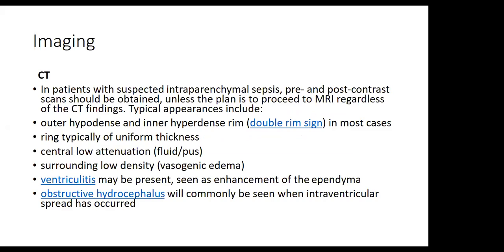CT: in patients with suspected intraparenchymal sepsis, pre- and post-contrast scans should be obtained. Typical CT appearance includes an outer hypodense and inner hyperdense double-ring sign in most cases; the ring is typically uniform with smooth and uniform thickness. Central low-attenuation fluid is surrounded by lower-density vasogenic edema. Ventriculitis may be present, seen as ependymal enhancement. Obstructive hydrocephalus commonly occurs when intraventricular spread has occurred.